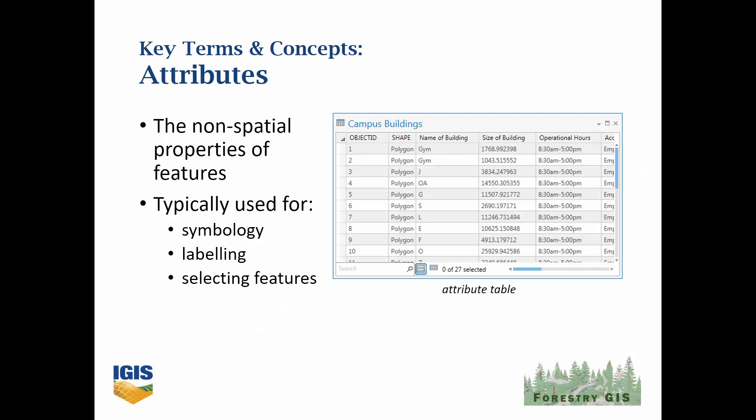Attributes are simply the properties of features that aren't necessarily spatial. It could be the name of a feature, or a category, or they could be numeric — such as the size of a building or the number of people who live there. Attributes are extremely useful in GIS, and we use them for all kinds of things, including symbology, labeling, selecting features, and analysis. In the software, you can right-click on any vector layer and select Open Attribute Table to see the attribute fields for that layer.